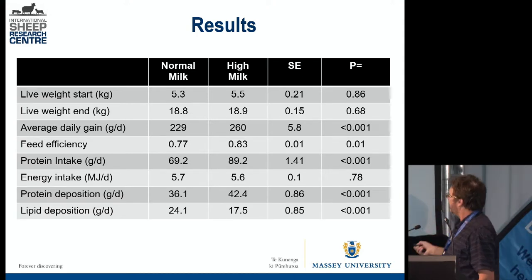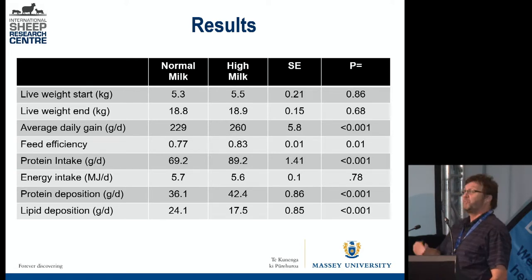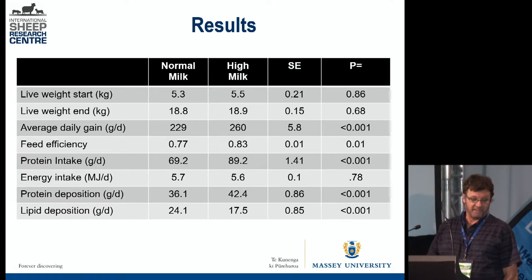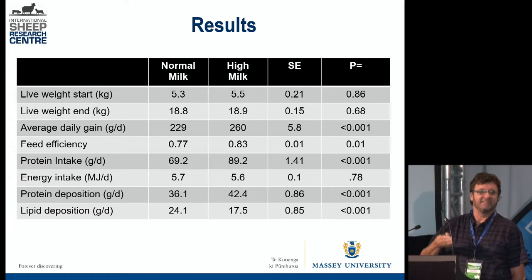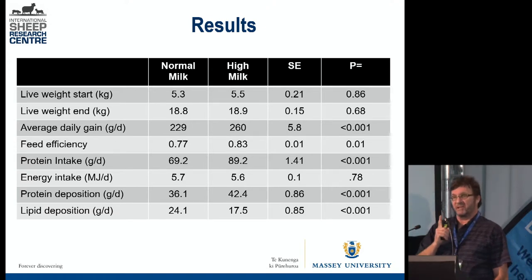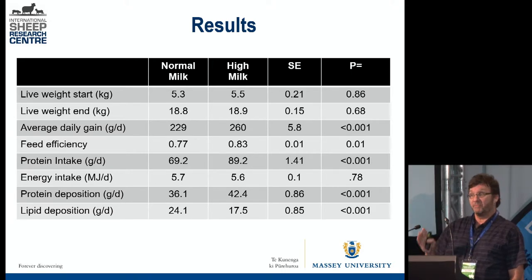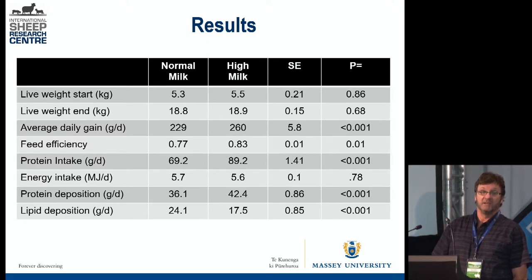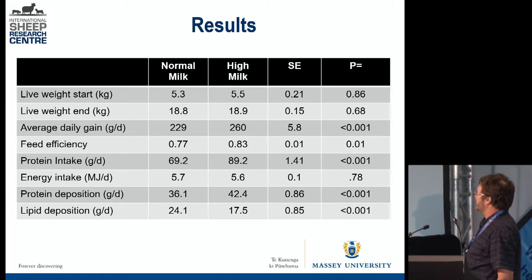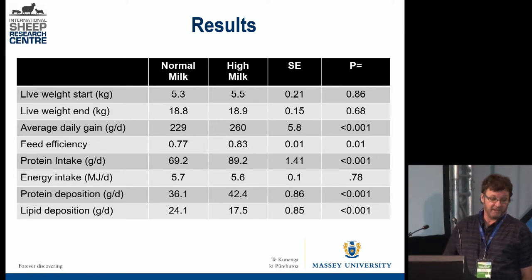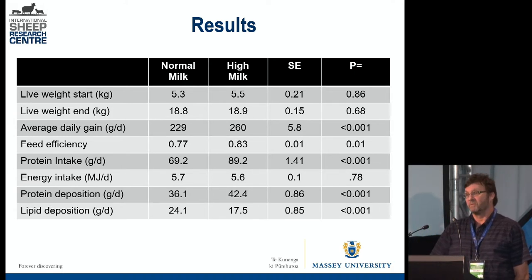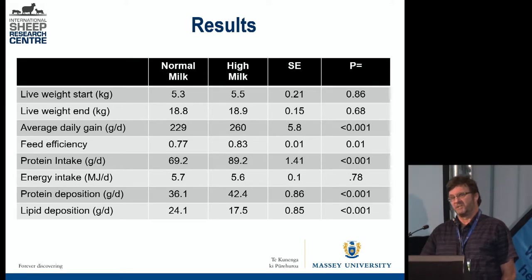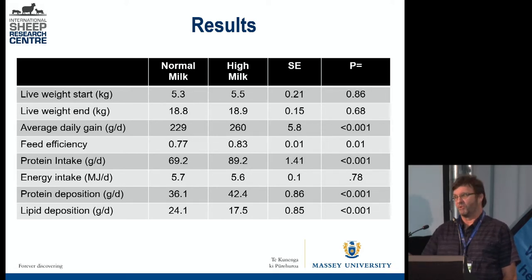But what was really interesting — since we had the whole body composition — we were able to calculate what is the protein deposition per day and what is the fat deposition per day. What we can see is that the ones on the high protein-to-energy ratio milk put about six grams more protein per day and about seven grams less fat. So those animals were growing faster and leaner. They grow faster because each time you put one gram of protein in the muscle, you also put three grams of water — that's how sheep grow. If it's fat, you put one gram of fat and a tiny bit of water, so in terms of growth it's less efficient.